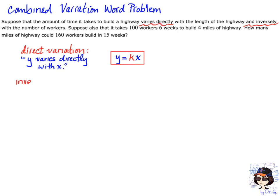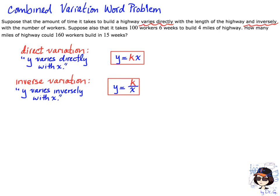Inverse variation has this kind of phrasing: y varies inversely with x. That is a slightly different type of equation. That equation will be y is equal to a constant k over the variable x.